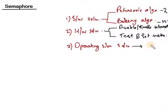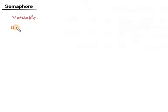Finally, the operating system solution is semaphores, which is more important and specified in the syllabus. That's why we are discussing semaphore alone. Semaphore is a variable used to control the critical section, and it has only two operations.